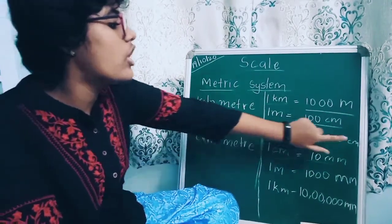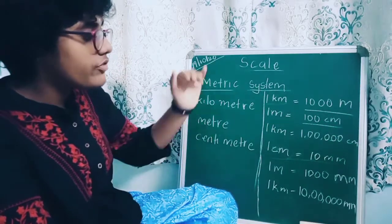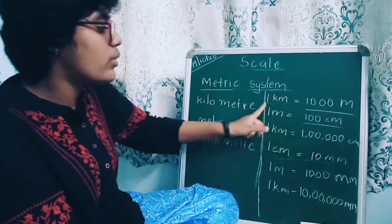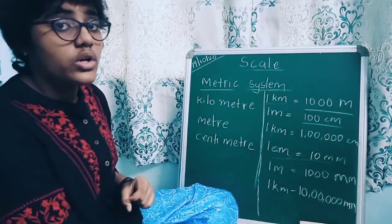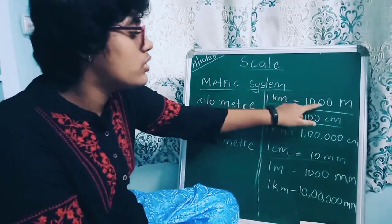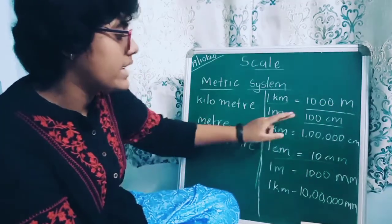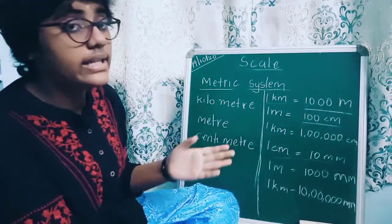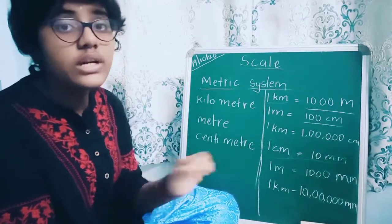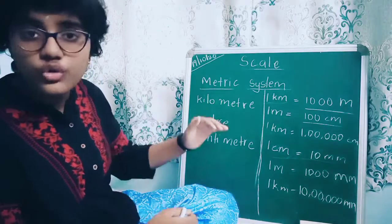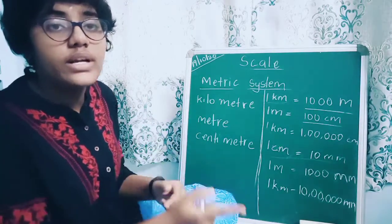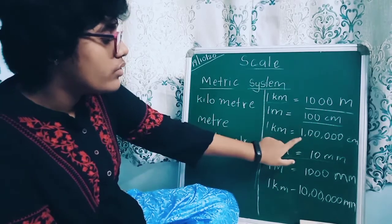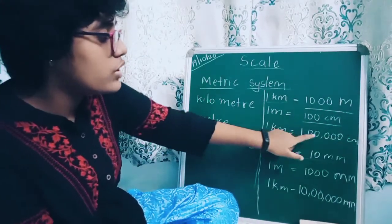So then, 1 kilometer equals how many centimeters? You should use logic. Because 1 kilometer equals 1000 meters, and 1 meter equals 100 centimeters, you multiply 100 by 1000. I have explained this calculation in another video given in the description about the mathematics used in this subject. The answer is 1 lakh centimeters — 1 kilometer equals 1 lakh centimeters.